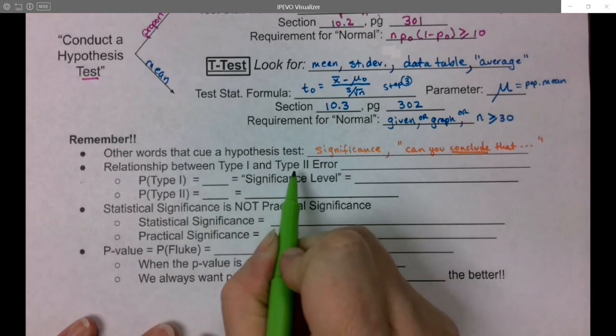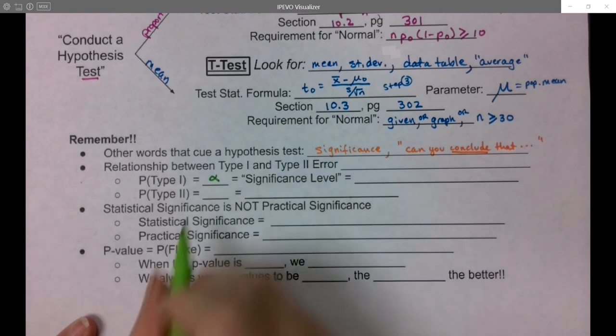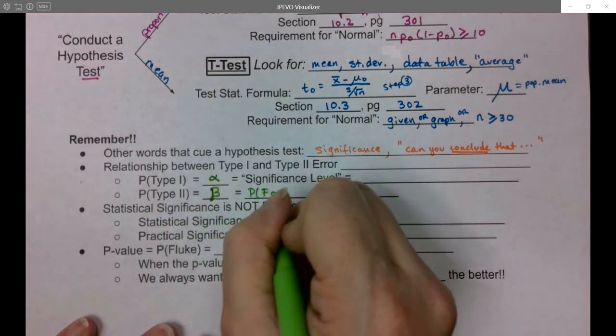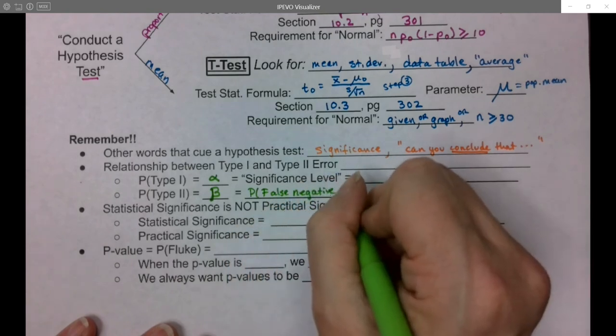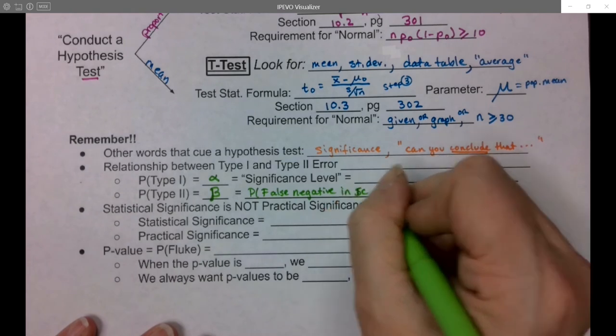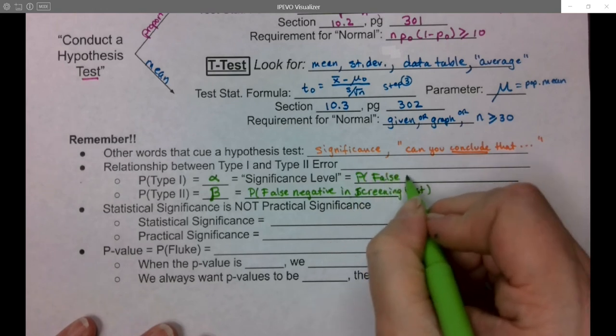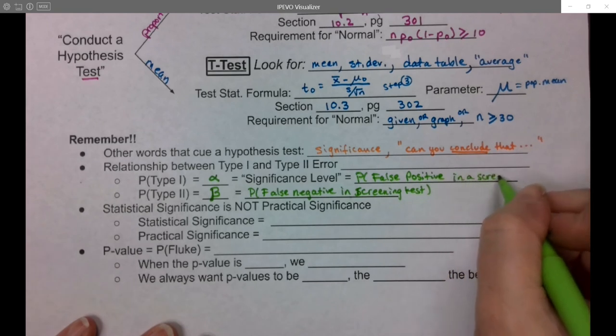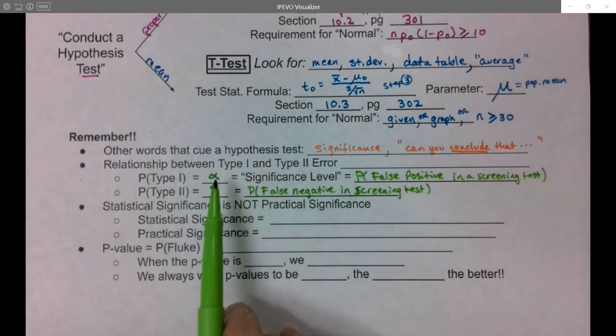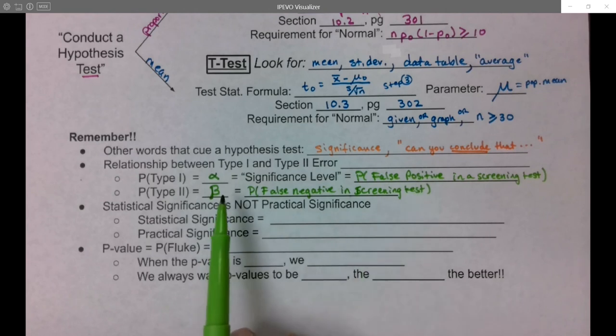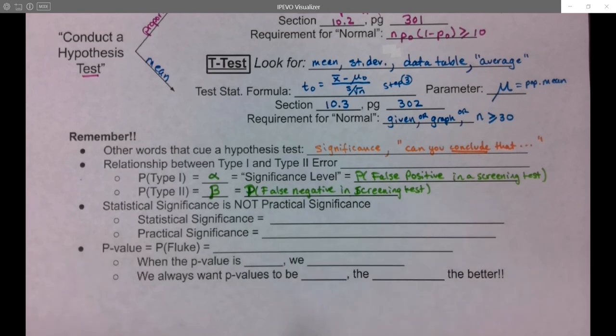Type I and Type II error. Remember, the probability of a Type I error is α, and the probability of a Type II error is β. So this is the probability of a false positive in a screening test, and this is the probability of a false negative. Alpha is the probability that it tells you that you have the disease when you don't, that it tells you you're pregnant when you're not. Beta is the probability that it tells you no disease here, and you actually have it, or you're not pregnant and you actually are. It's the probability of making that error.